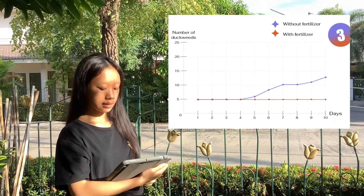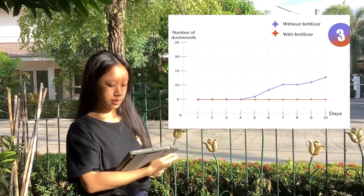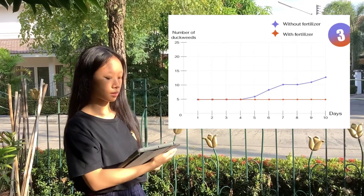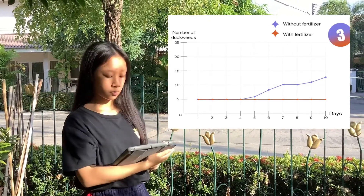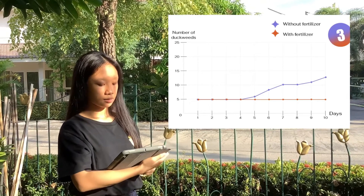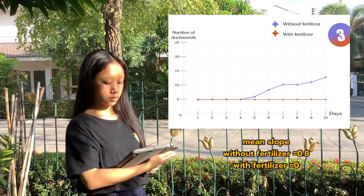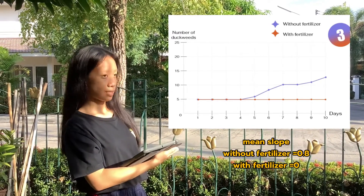This graph has two lines — the red one is with fertilizer, and the purple one is without fertilizer. The container with fertilizer shows the result stayed the same and didn't grow; the slope is 0. The container without fertilizer stayed the same for the first 4 days, then started to grow on day 5 and continued growing to day 10, reaching 13 duckweeds. The slope of duckweed with fertilizer is 0.03, and the slope of duckweed without fertilizer is 0.8.